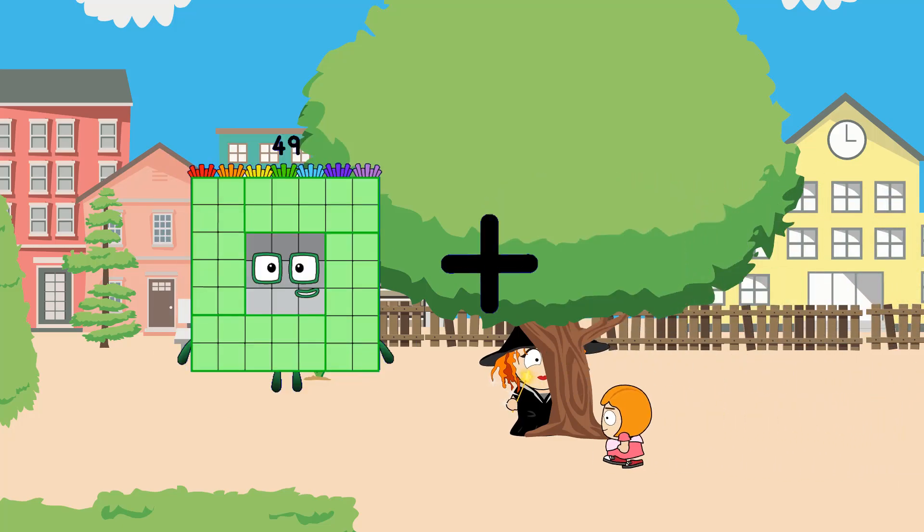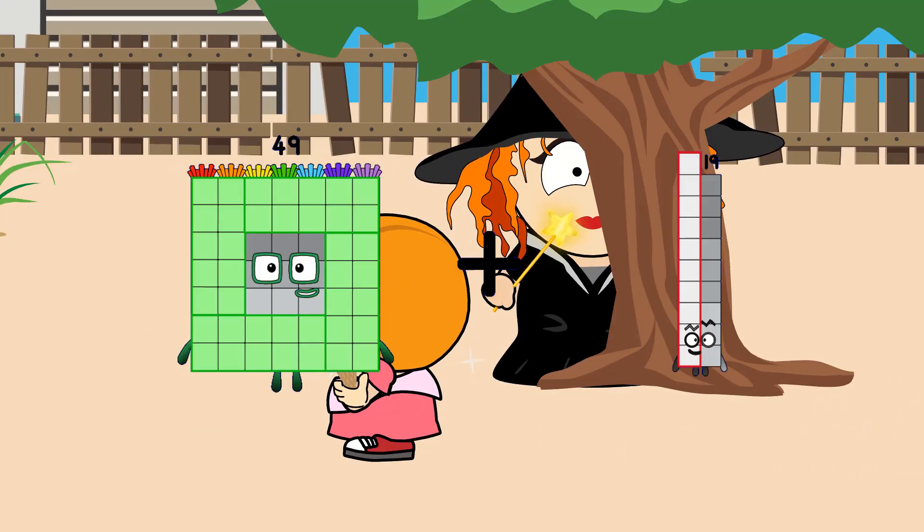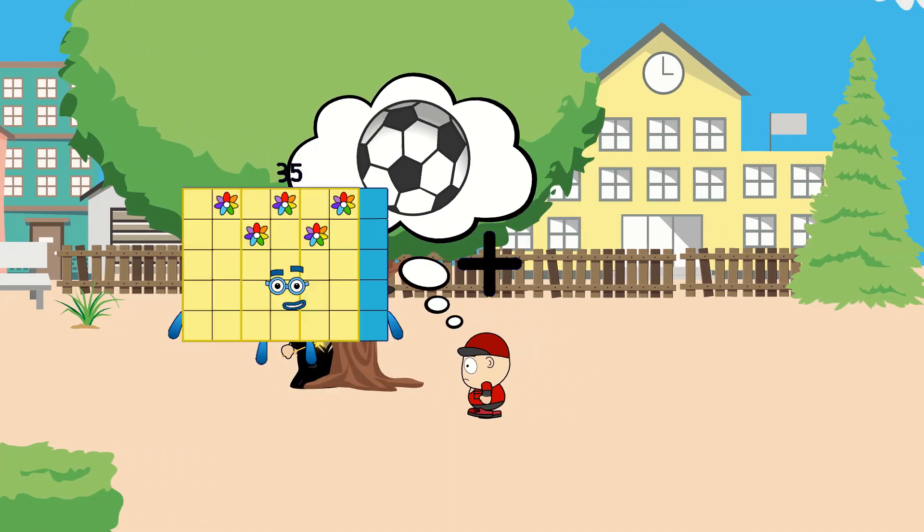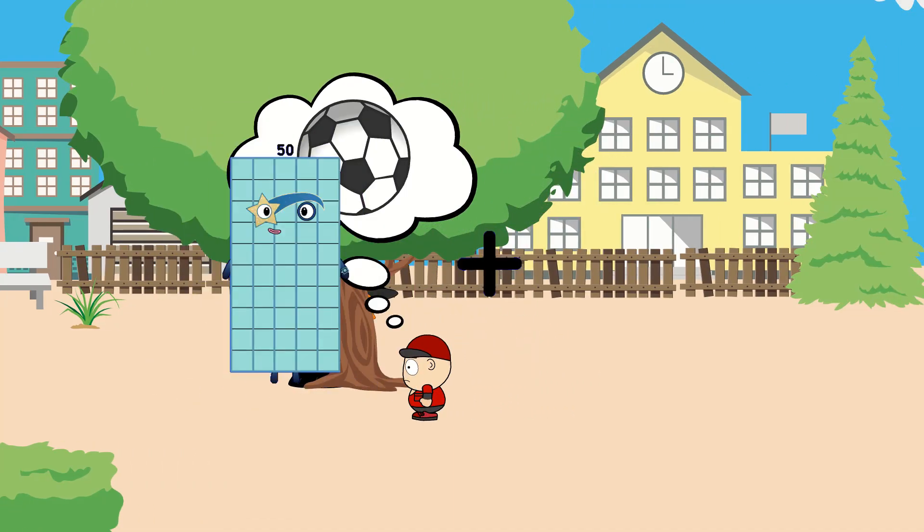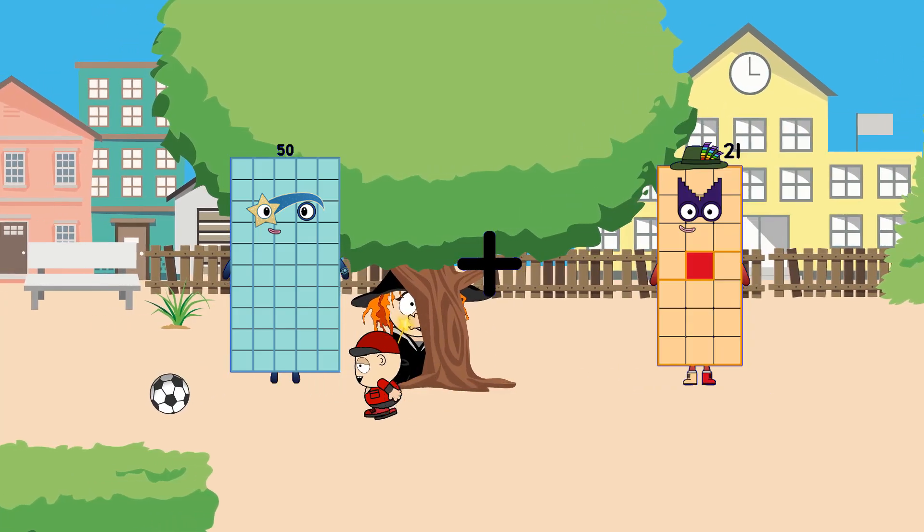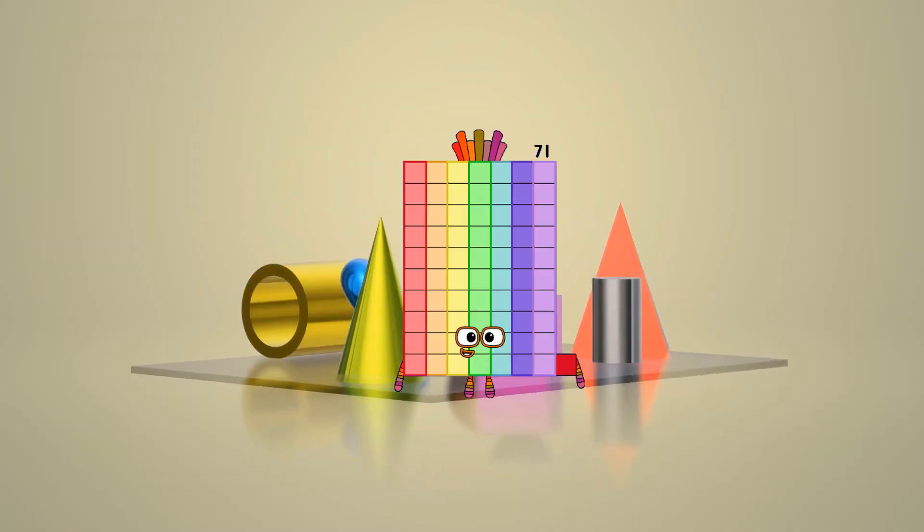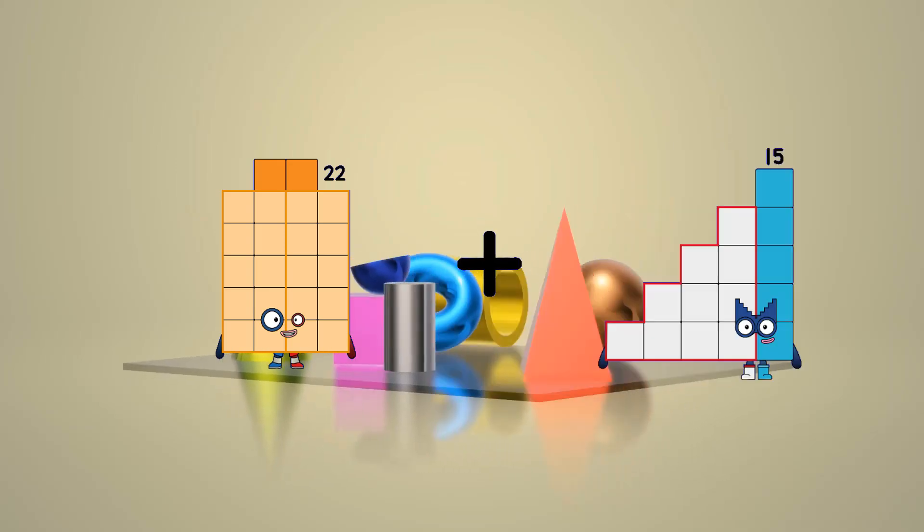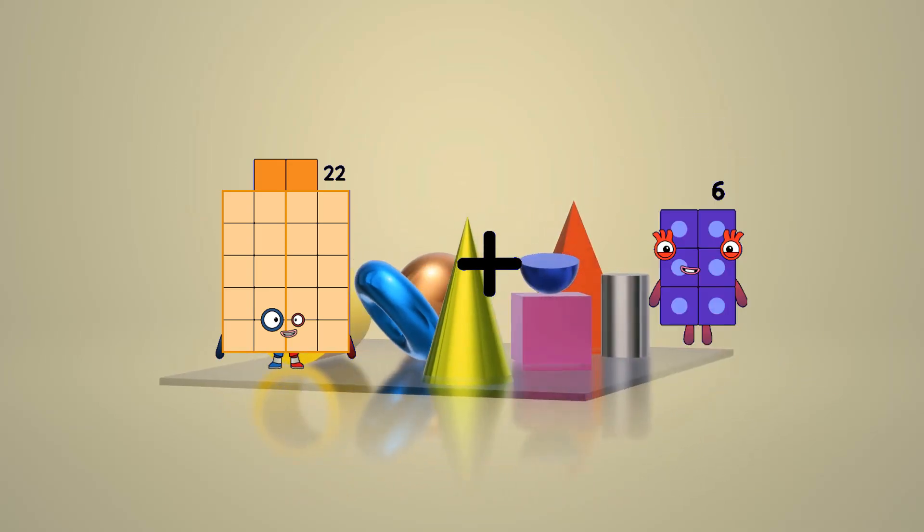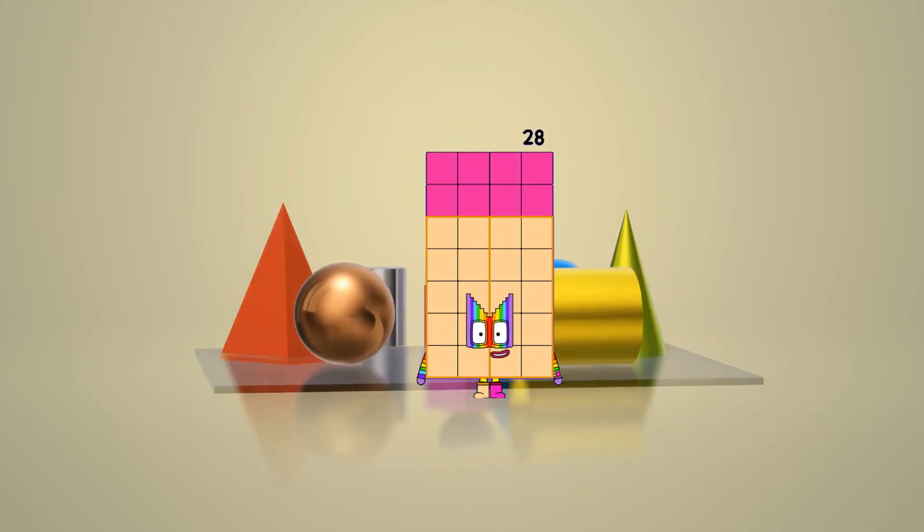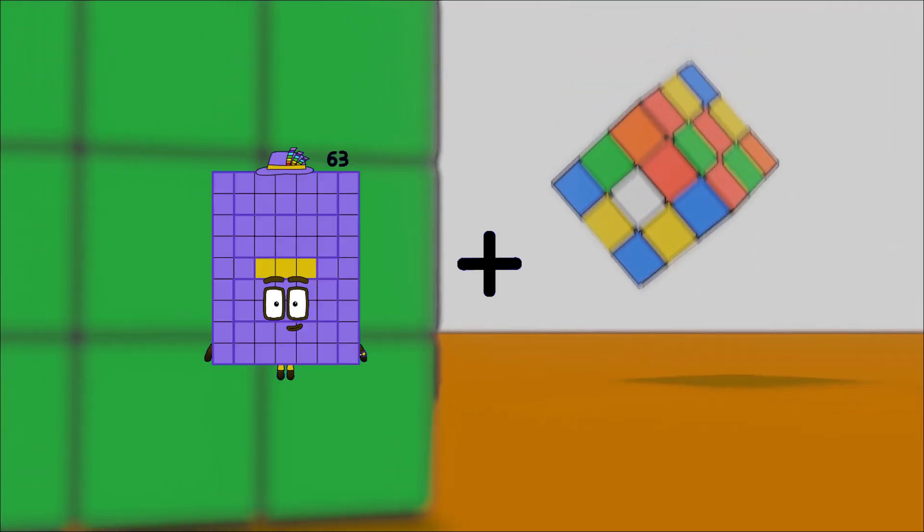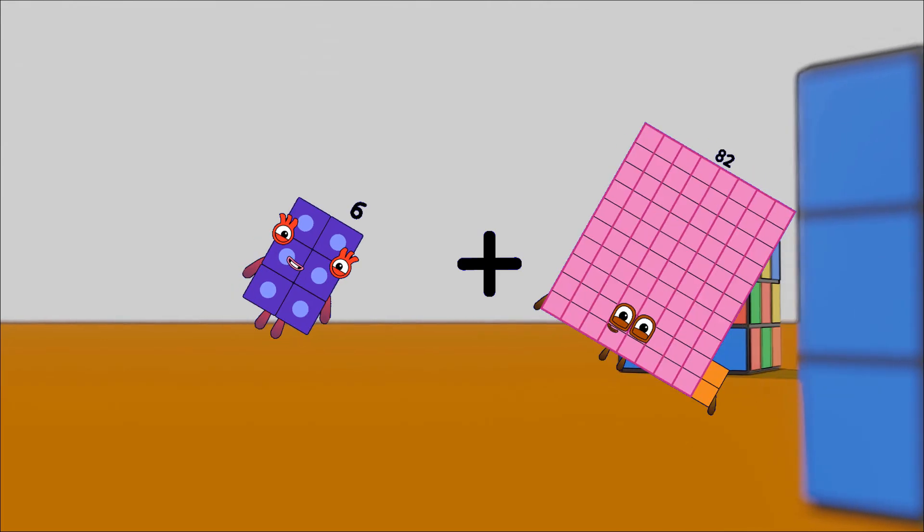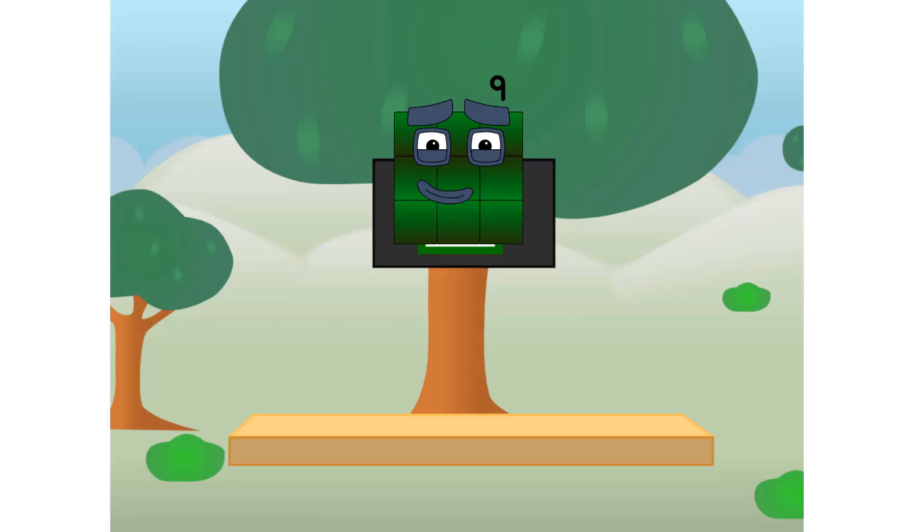49 plus 10 equals 59. 50 plus 21 equals 71. 22 plus 6 equals 28. 6 plus 82 equals 88. Entering lunar orbit.